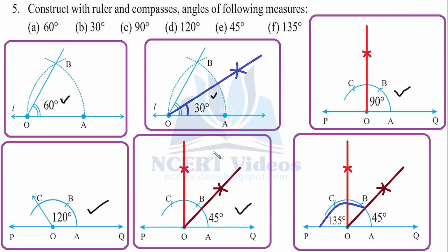For 135 degrees — the trick is that a straight line measures 180 degrees. So first make 45 degrees, and the rest on the opposite side — outside of the 45 degrees up to line EO — will be your 135 degrees.